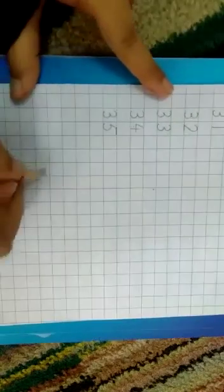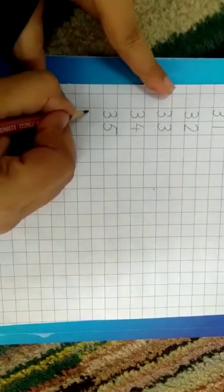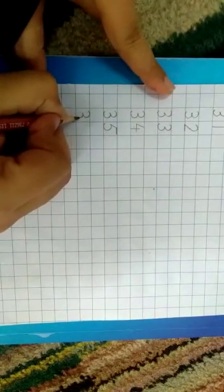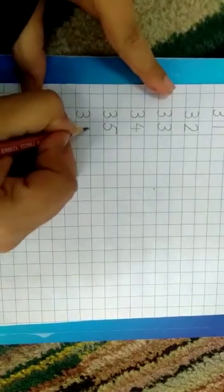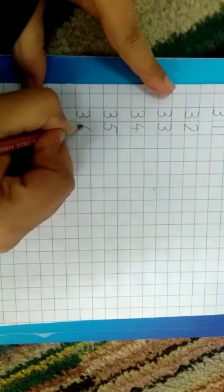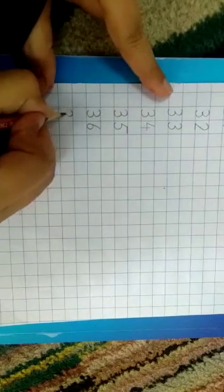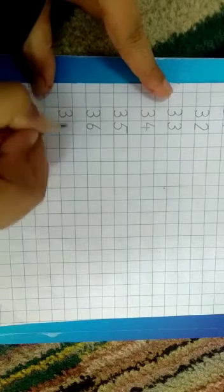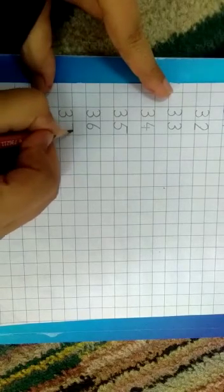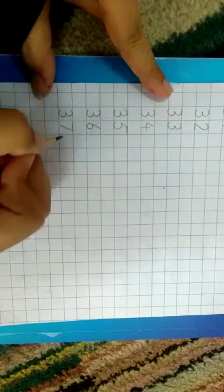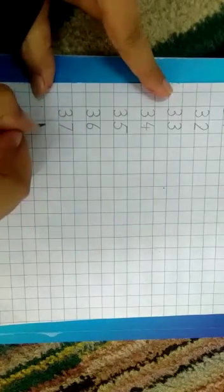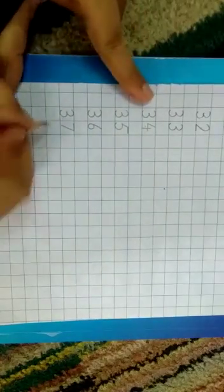Next one is thirty. Six. Thirty. Seven. Straight line. Then slant.